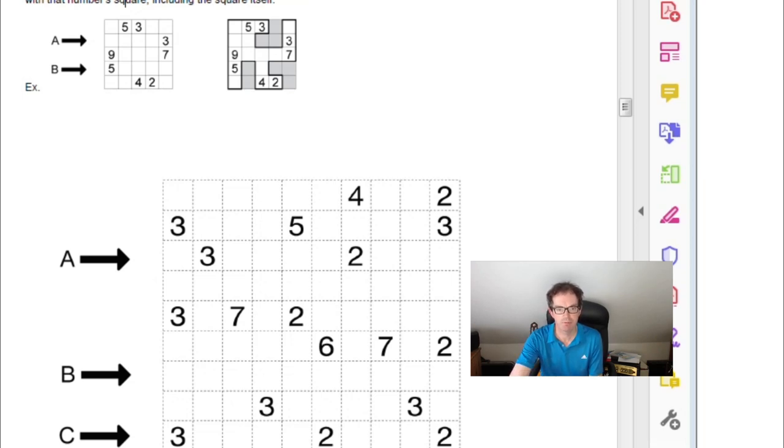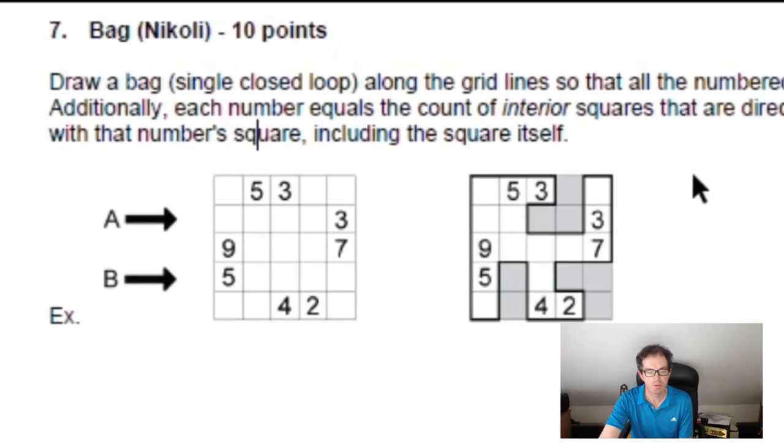And how does it work? Well, it has, as usual, very simple rules that lead to some quite interesting logic. So let's take a look at this example from the top of the screen there, and this is going to be the best way of trying to understand it. So you have to draw a single closed loop along grid lines so that all the numbered squares are inside the bag, as it's called here, or the cave. And additionally, each number equals the count of interior squares that are directly in a horizontal or vertical line with that square's number.